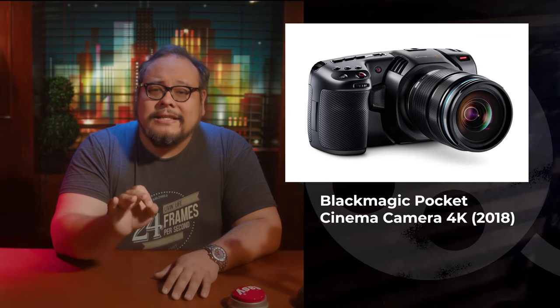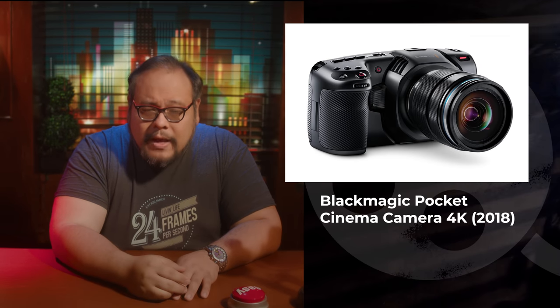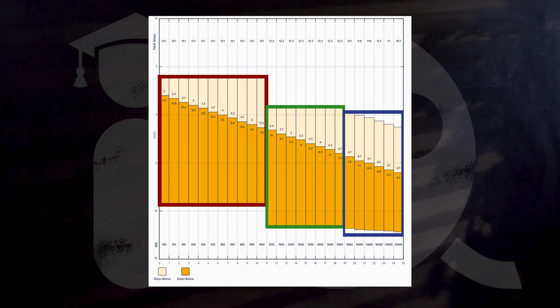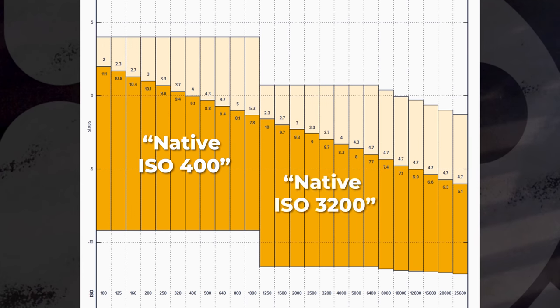What that all boils down to in practice is essentially we get a camera that behaves like two different cameras depending on our ISO setting. As of this video, Panasonic, Sony, RED, and now Blackmagic are offering cameras with this dual ISO capability. I'm going to focus on the 2018 Blackmagic Pocket Cinema Camera 4K as an example of how this feature will affect your approach to shooting. I'm not a big fan of the term native ISO because I think it hides some strategic benefits of ISO — you'll see more what I mean as we continue on.